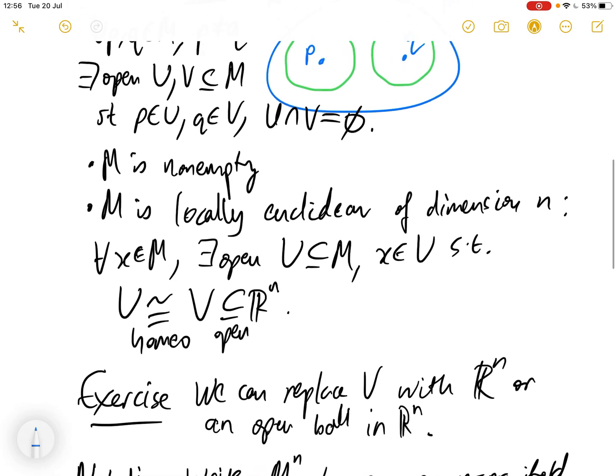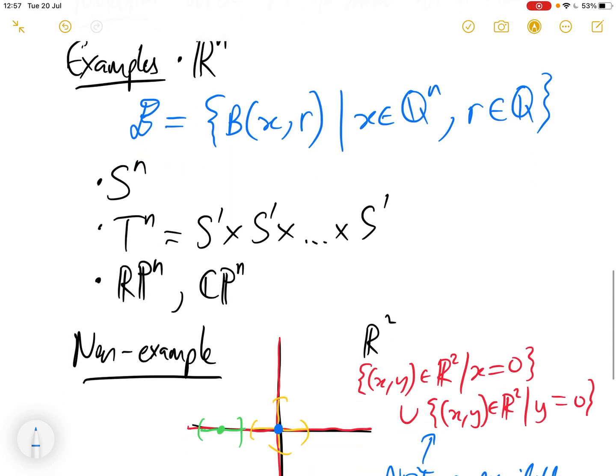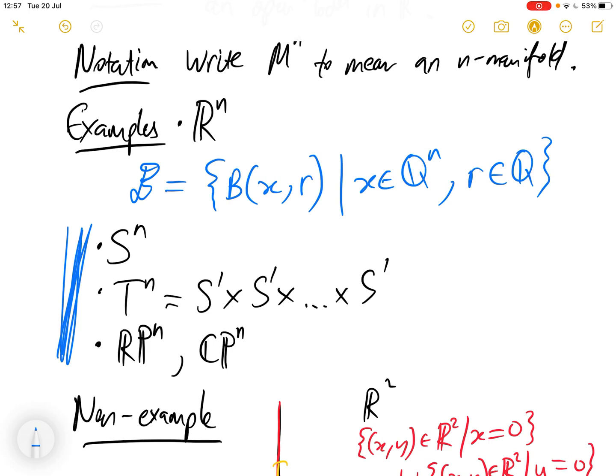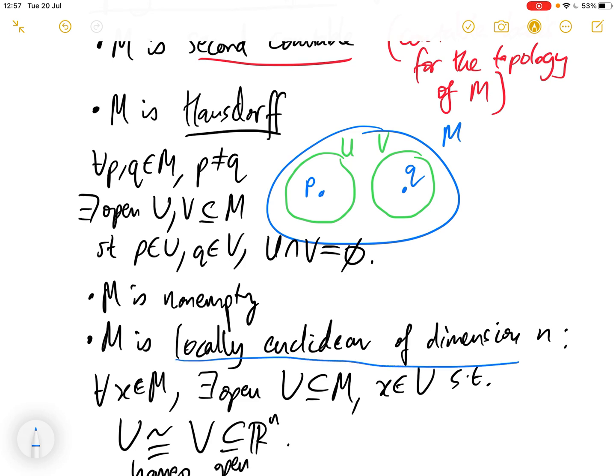In practice, I'll just make the comment that the Hausdorff and second countability conditions are usually easy to check. The reason for that is that there's a nice result that tells us that for any subspace with the subspace topology, if the space the subspace is of is second countable and Hausdorff, then the subspace is also second countable and Hausdorff. For example, if we want to prove that any of these spaces here are manifolds - if we want to prove S^n is a manifold, well S^n is a subspace of R^(n+1). We know R^(n+1) is Hausdorff and second countable, S^n has the subspace topology, and therefore S^n is second countable and Hausdorff. So in practice, these conditions are usually easy to check. The harder piece of work is showing that M is locally Euclidean of dimension n.